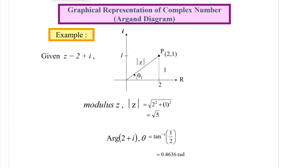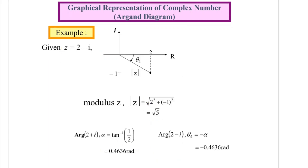Example: find the modulus and argument for z = 2 + i. Since z = 2 + i is in the first quadrant, modulus z = √(2² + 1²) = √5. Argument: tan θ = 1/2, so θ = arctan(1/2) = 0.4636 radians. For z = 2 − i, it is in the fourth quadrant. Modulus z = √(2² + (−1)²) = √5. The basic angle α = 0.4636 radians. Since z is in the fourth quadrant, θ = −α = −0.4636 radians.